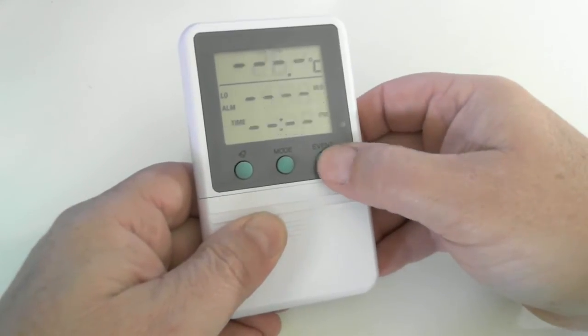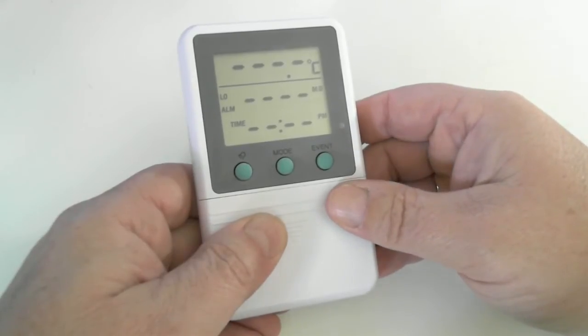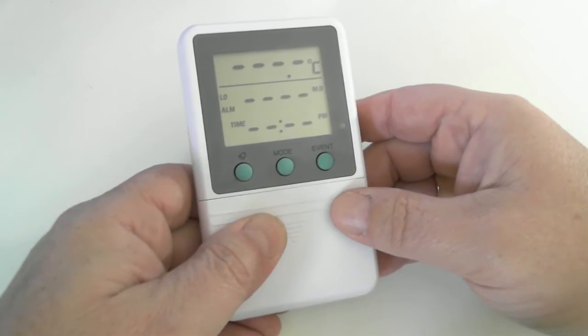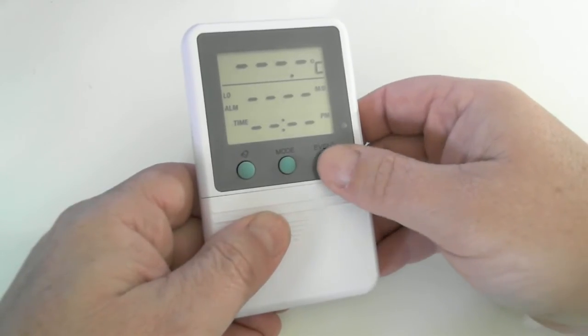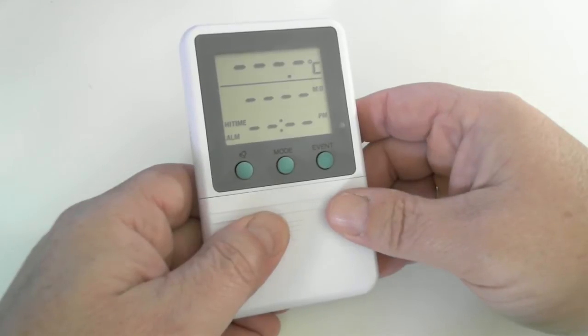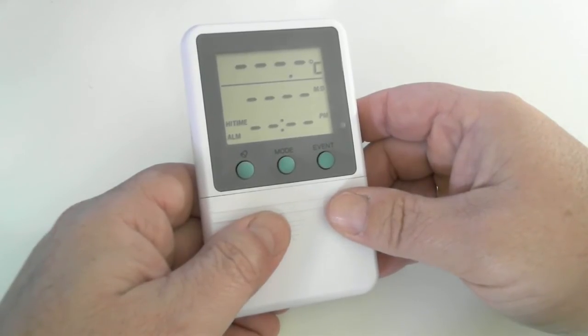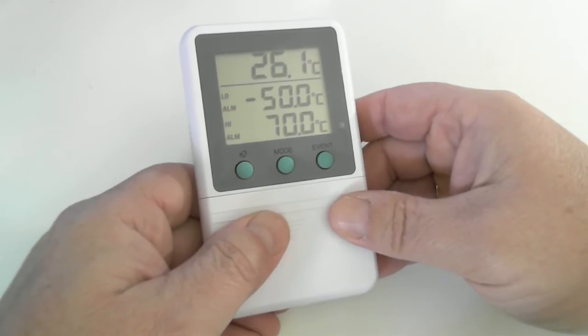If we press the event for this, this would show the low alarm time and date stamp, which we have not had an event so there is no data. Pressing again would give us the high alarm data. Press event again and we are back into the main alarm display screen.